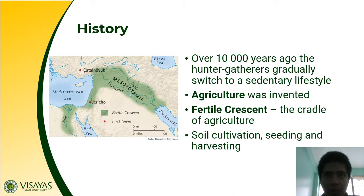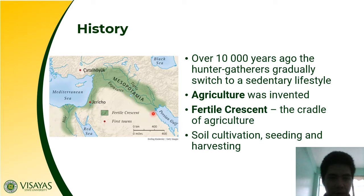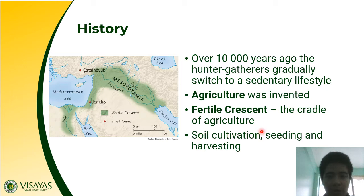According to archaeologists, the cradle of agriculture is in the fertile crescent, shown here in the picture as the green shaded part. We have here the Nile River, Jericho, and Mesopotamia where you can find the Tigris-Euphrates River — this is in the Middle East, including Israel and part of Egypt. Our ancestors began soil cultivation, seeding, and harvesting in this region, supported by findings of archaeologists.